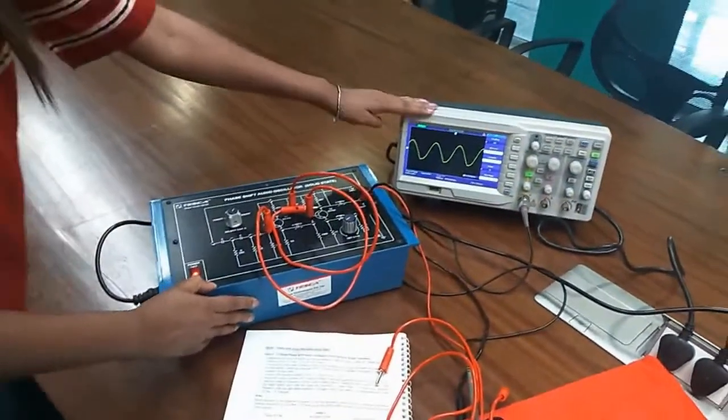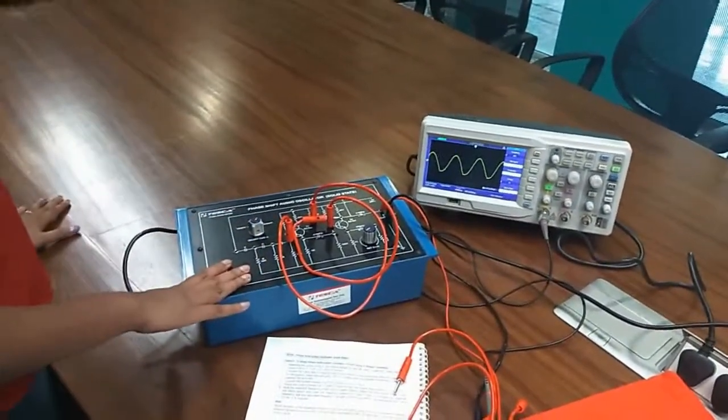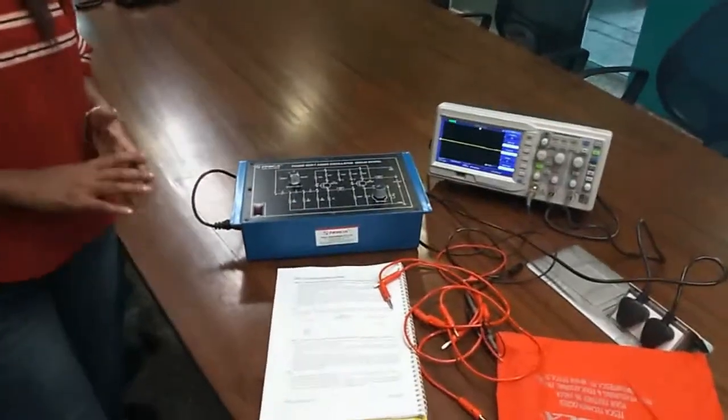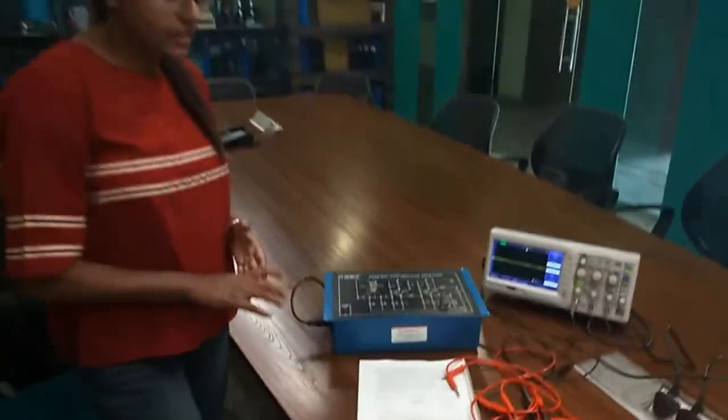So this is our output waveform and this is the circuit diagram of phase shift oscillator using single transistor. Now we are going to build phase shift oscillator using two transistors.